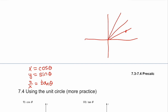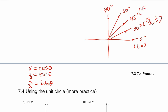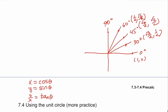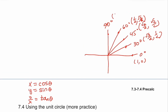If you know the 30, 45, and 60 degree points, you know the first quadrant. Starting at zero, that is the point (1, 0); 30° is (√3/2, 1/2); 45° is (√2/2, √2/2); 60° is (1/2, √3/2); and 90° is (0, 1). Now let's look at some patterns.